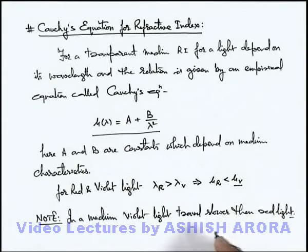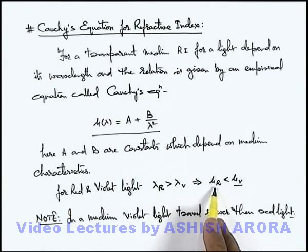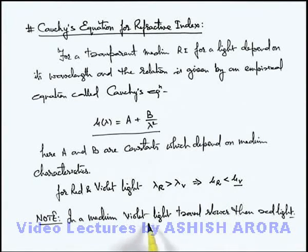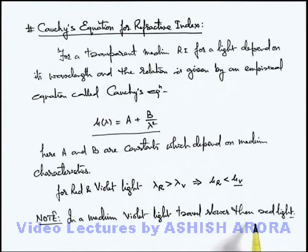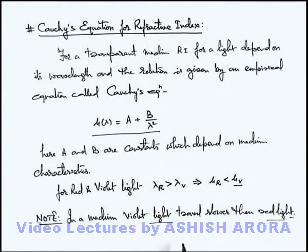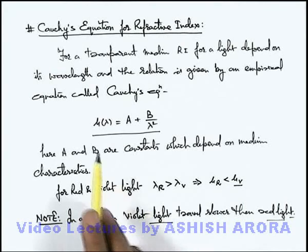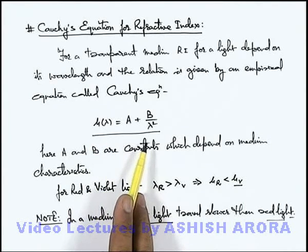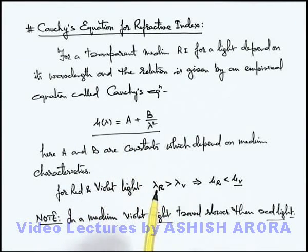So if white light is incident on a medium, red light, as its refractive index is less, will travel faster compared to violet light, and there will be a path difference created between violet and red light. However, this path difference will not generally be utilized in various cases because both red and violet light have different wavelengths. So in various phenomena, we are going to discuss the effect that the refractive index of a medium depends on its wavelength. The very first phenomenon we are going to discuss in the coming section is the dispersion of light.